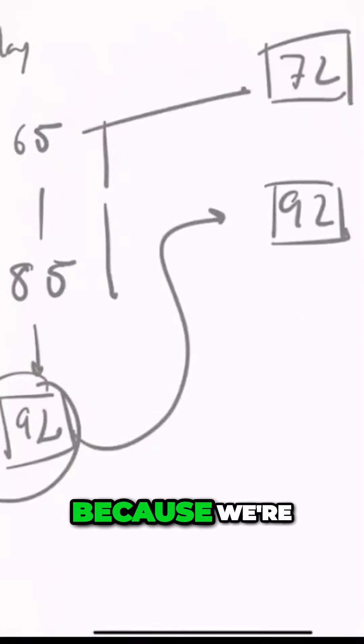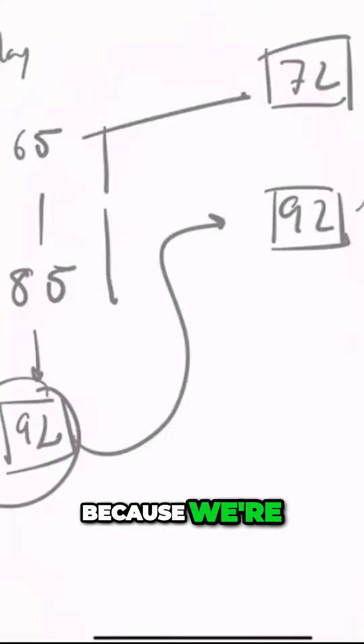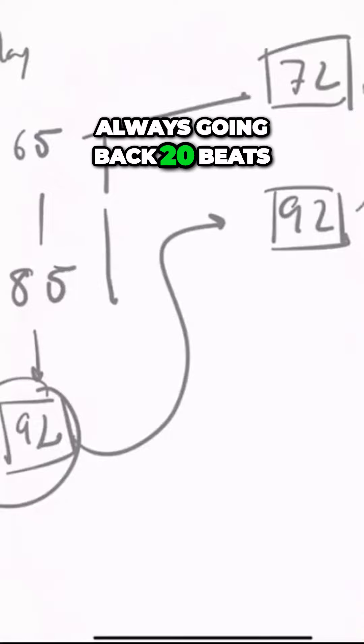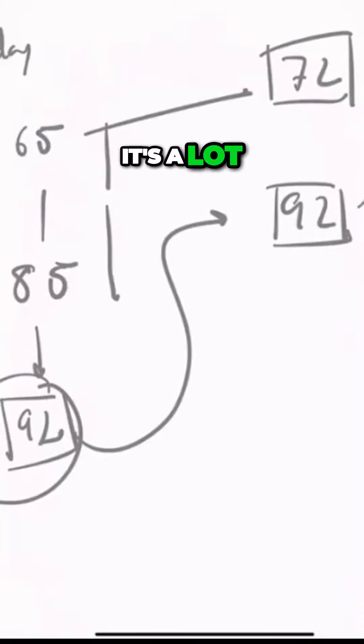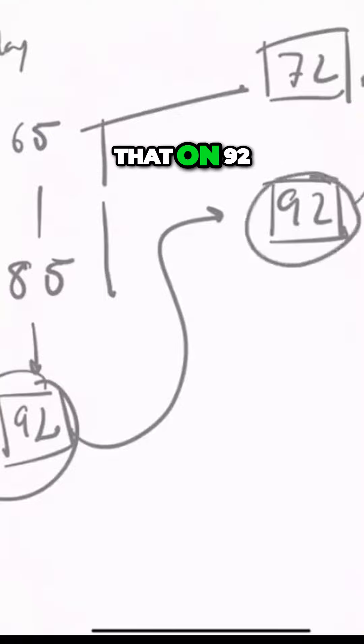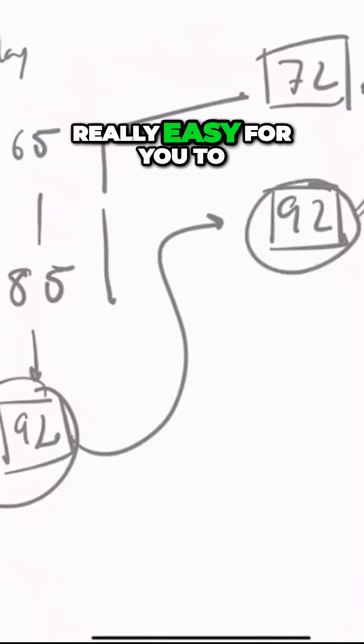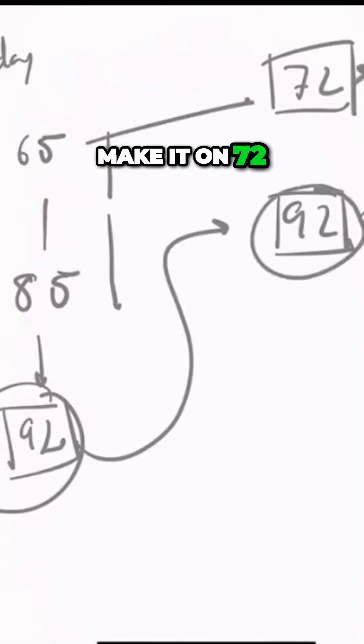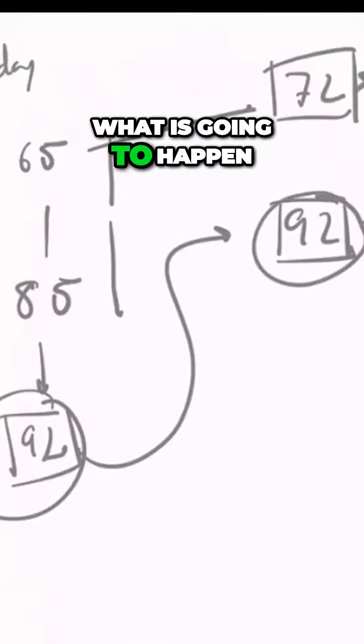And it's really easy because we're always going back 20 beats. 20 beats is a lot. So if you are able to make that on 92, it should be really easy for you to make it on 72. What is going to happen?